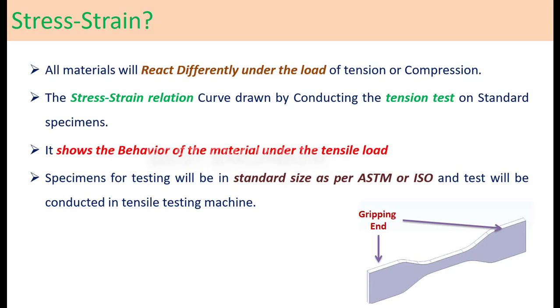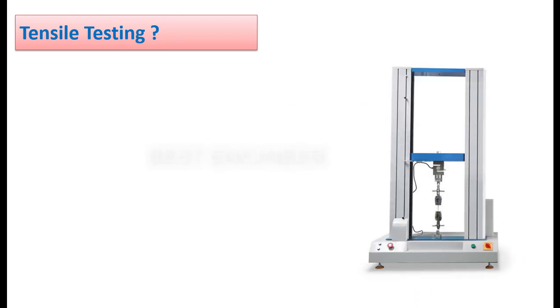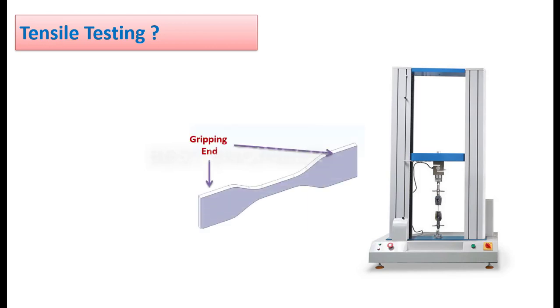How the tensile testing will be conducted. This is the tensile testing machine. This is the stand for testing. These are the two ends for gripping. These are the grippers. This is the specimen after gripping. This is the strain gauge for extension measuring.